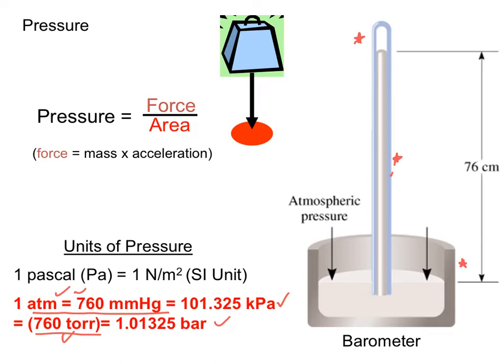When we do that, basically what ends up happening is as atmospheric pressure here pressing down on the container of mercury increases, that increases the height of this column of mercury.